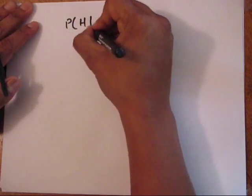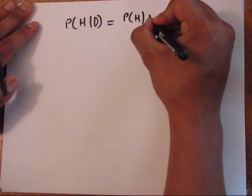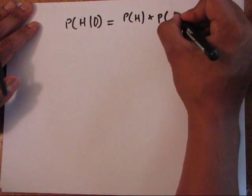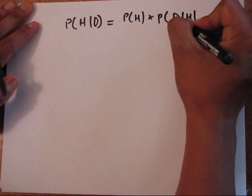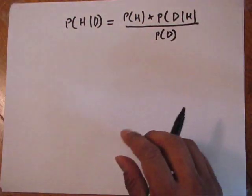Like we said before, we have our equation, we have our Bayesian theorem, which is the probability of a hypothesis given the data equals the probability of the hypothesis (the prior) times the likelihood of the data (the probability of the data given the hypothesis) divided by the probability of the data. That's our Bayes' theorem.